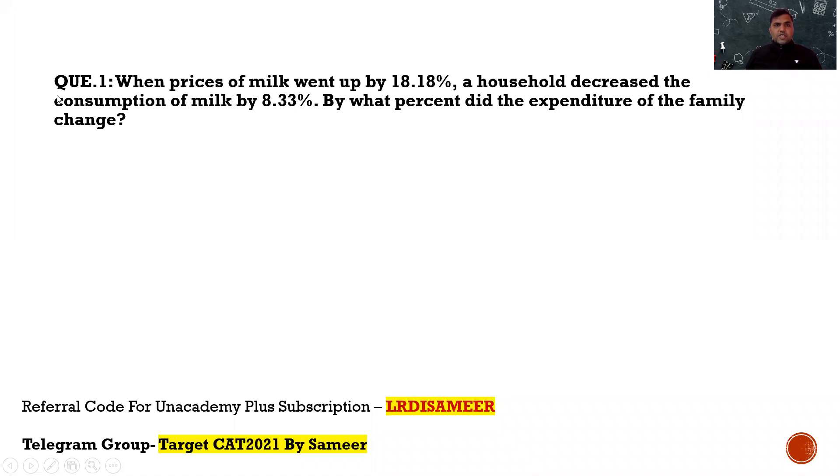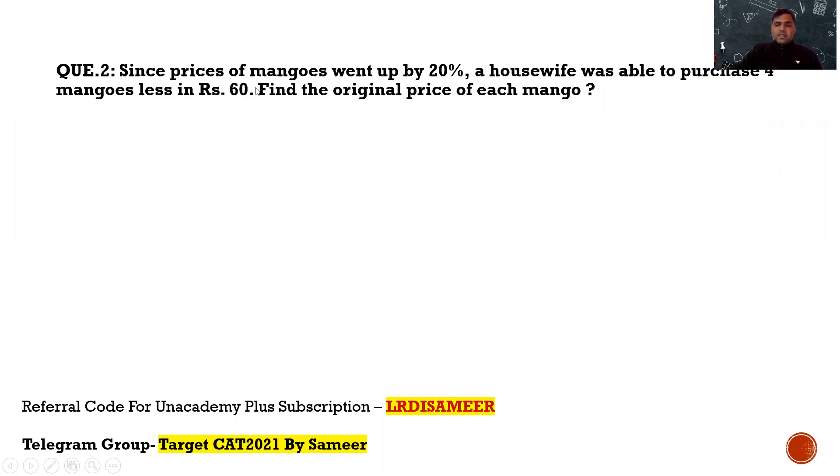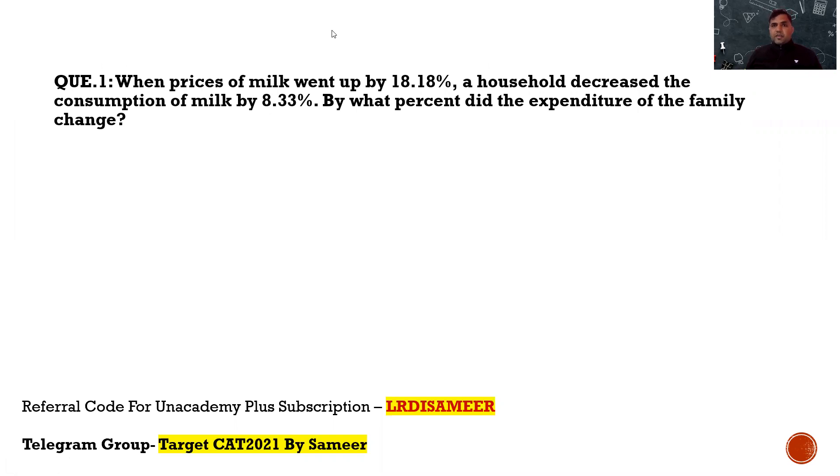So, here is the first question of the percentage topic. It says, when the prices of milk went up by 18.18 percent, a household decreases the consumption of the milk by 8.33 percent. By what percent did the expenditure of the family change? A very simple question.